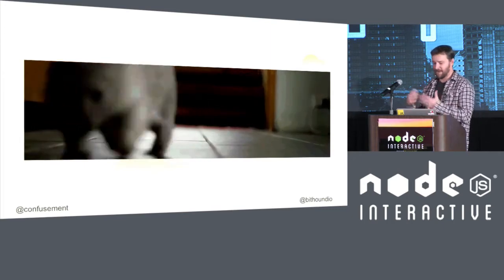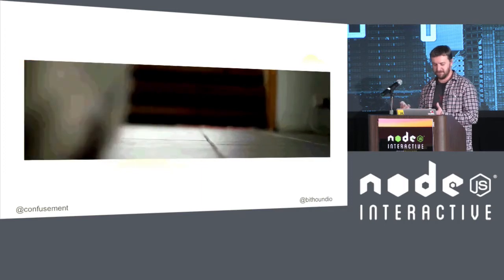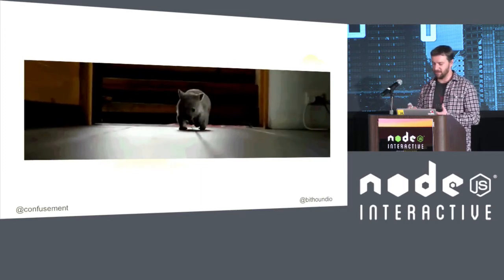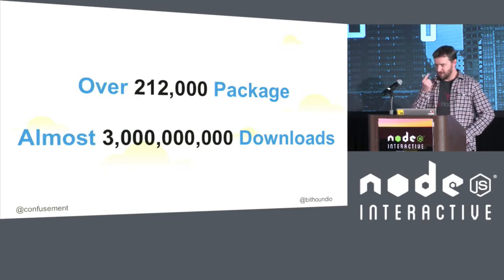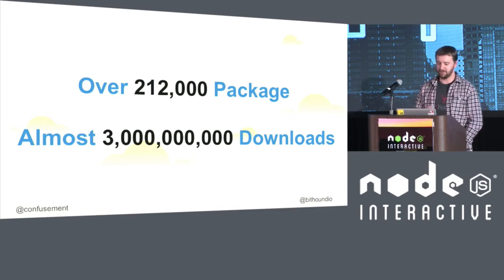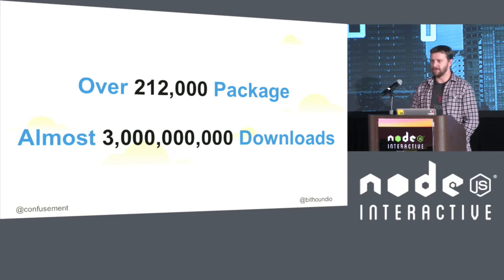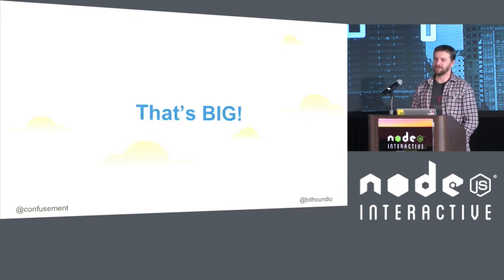That's a cute little wombat — I figured it was way cuter than the NPM logo. As we've seen earlier today in some of the numbers on the screens, NPM right now has over 212,000 packages — it's probably more than that since these numbers are three days old — and sees about three billion downloads a month.